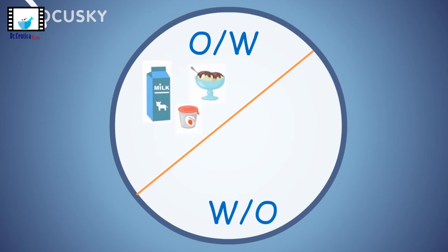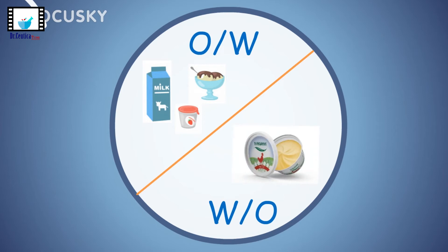When the reverse is true — meaning the oil is the external phase — we have water-in-oil emulsions. An example of such is margarine, in which water or milk is dispersed in a blend of vegetable oils and fat.